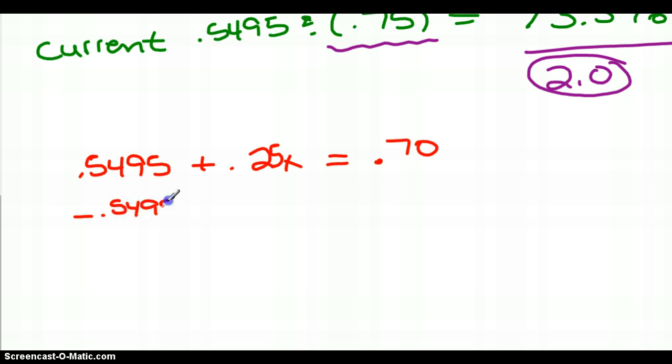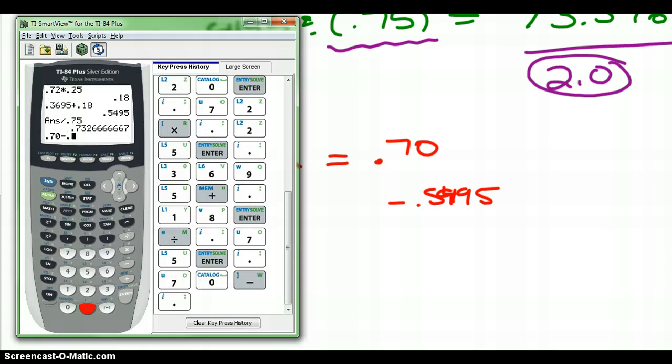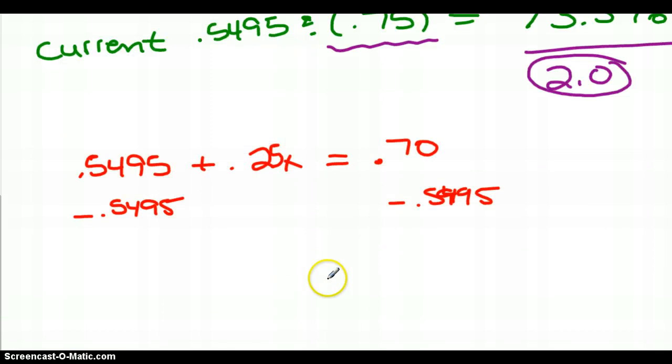So let's subtract that. So 0.70 minus 0.5495 is 0.1505. And the last bit, I need to just divide by that 0.25.